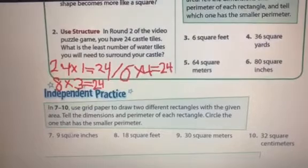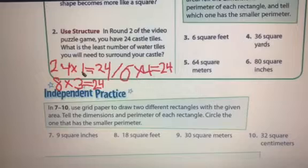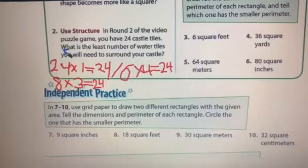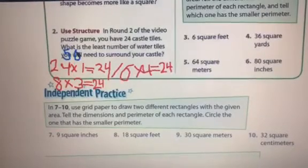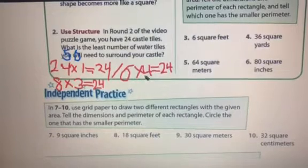For the first, 24 plus 1 is 25. 25 multiply 2 is equal to 50. Then the perimeter will be 50. The second one, 6 plus 4 is equal to 10.